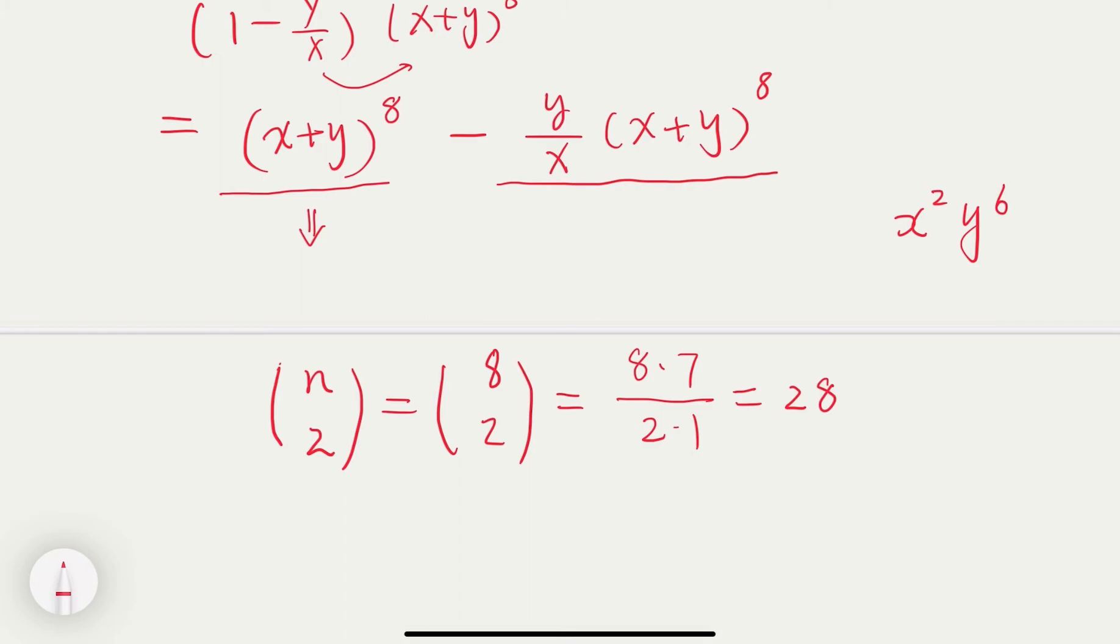And here, you have this term, y divided by x times something here. In order to get x squared y to the 6th, what you need is x cubed y to the 5th. So here, when you times y over x, that would reach x squared y to the 6th. So what is the coefficient here? There's a negative sign, so that coefficient is negative n choose 3, so negative 8 choose 3.